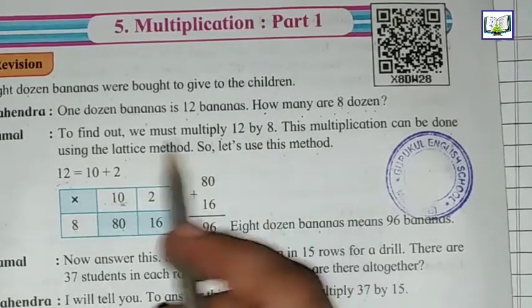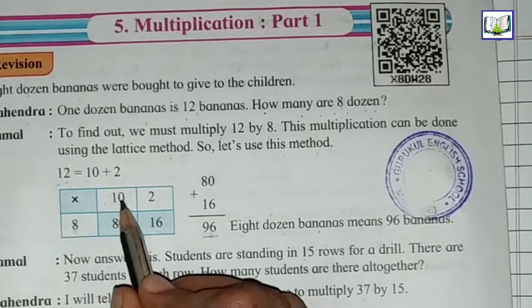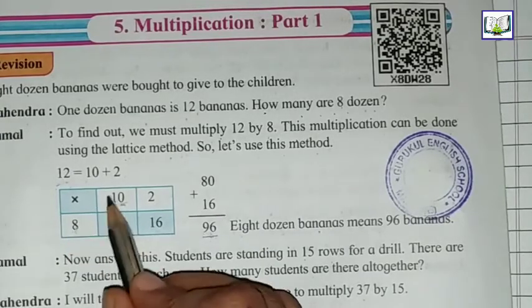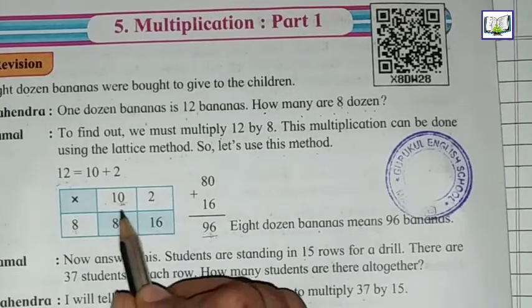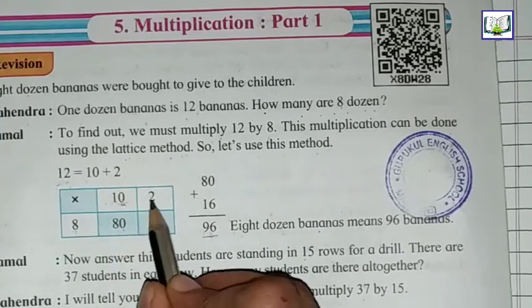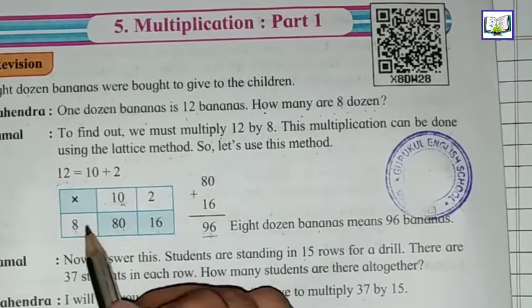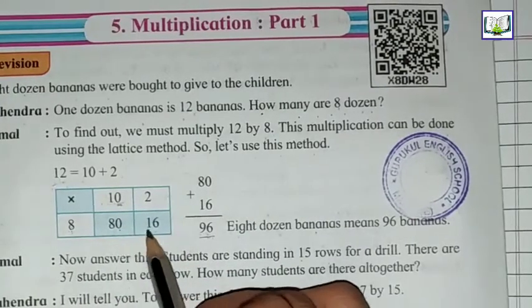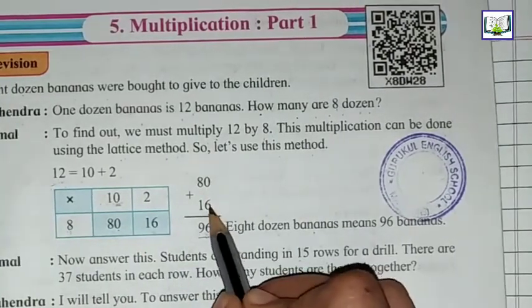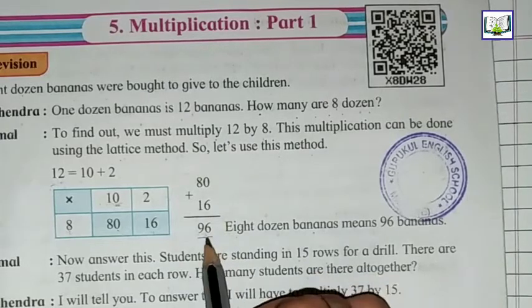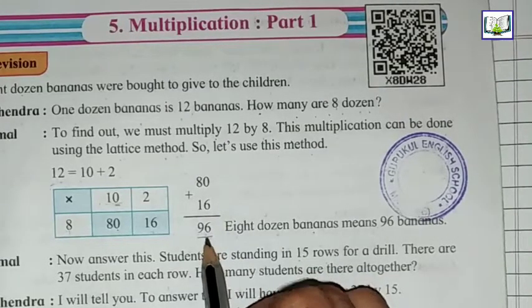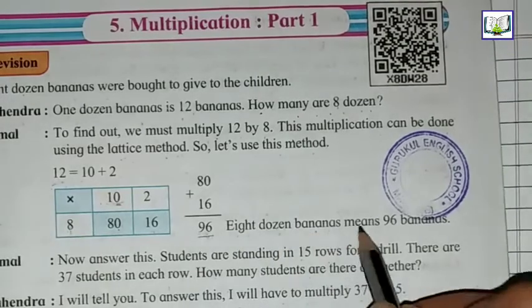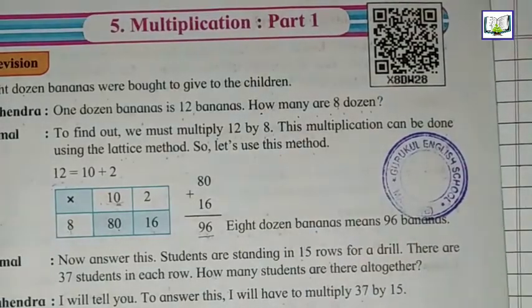The multiplication says: 8 times 0 is 0, 8 times 1 is 8, so that's 80. Now 8 times 2 is 16. We have multiplied them by 8. The answer is 80 and 16. So 80 plus 16 equals how much? It's 96. So the answer is 8 dozen bananas means 96 bananas.